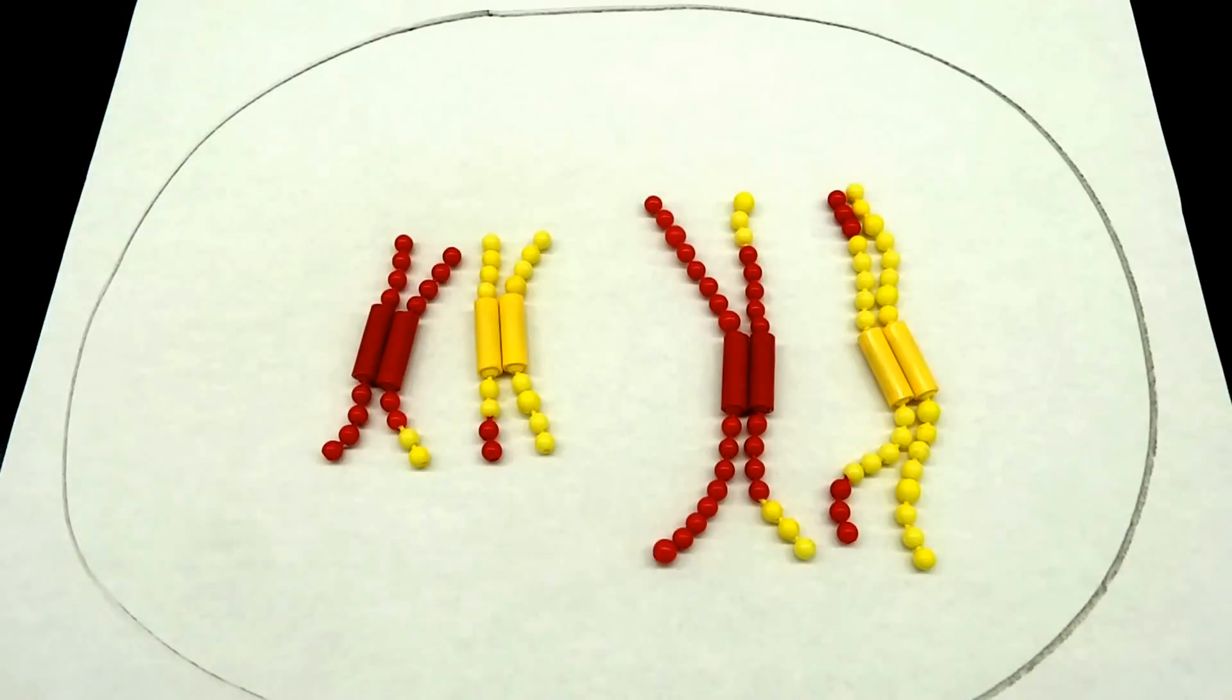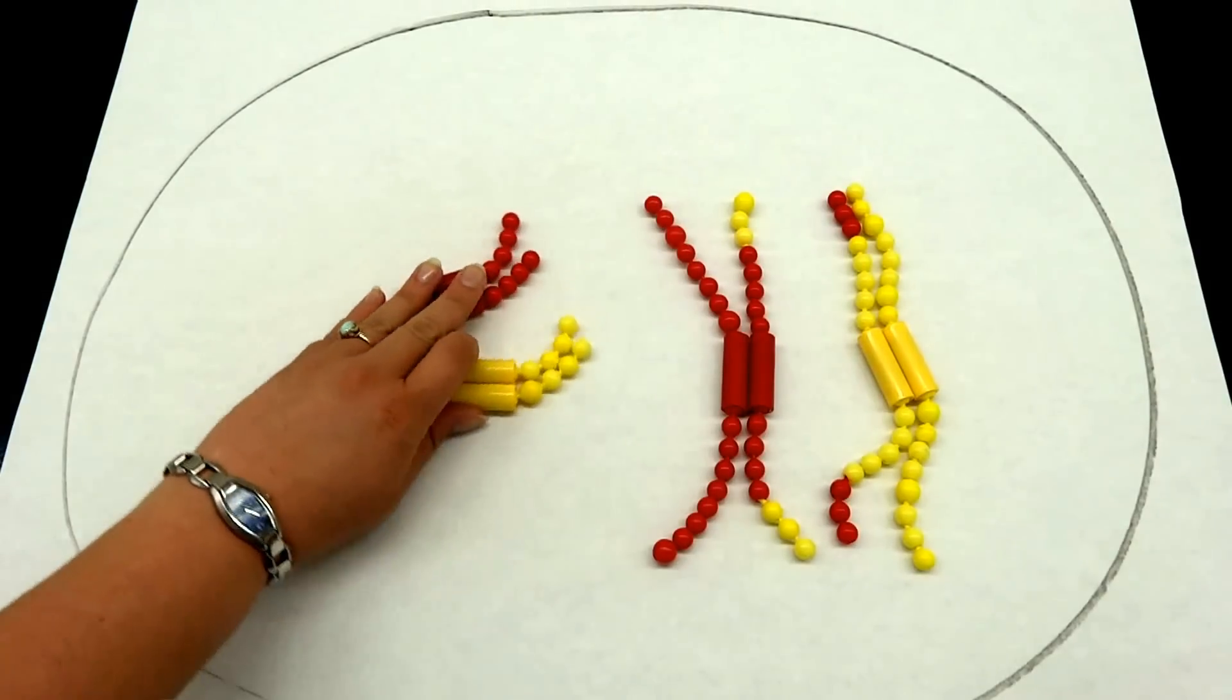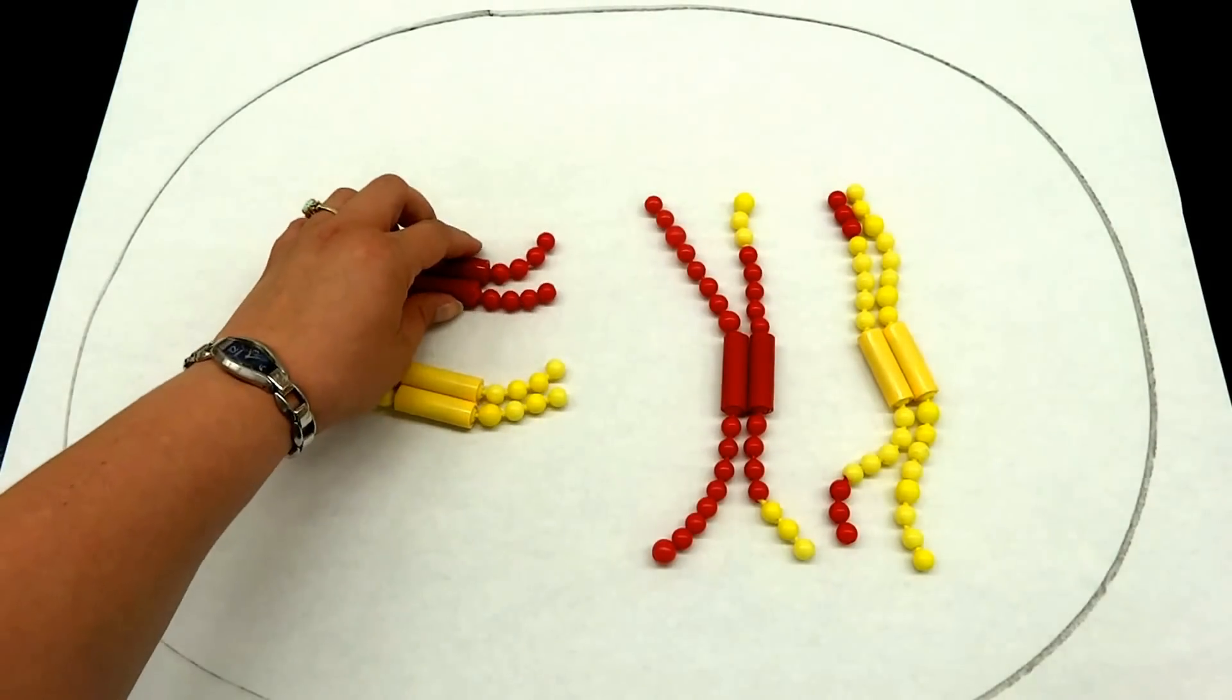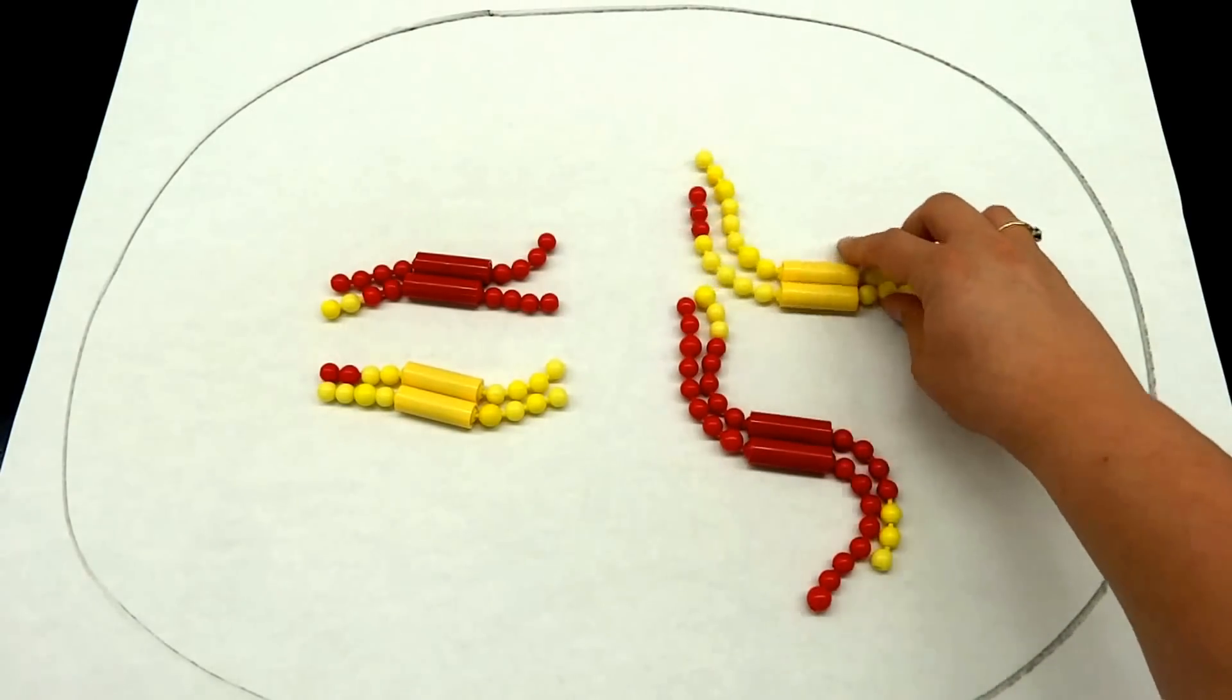Now we're still in prophase and we are going to line up, moving into metaphase. In metaphase we line up our tetrads along the metaphase plate. Let's say our metaphase plate is running right down the center here. Our chromosomes are going to line up on either side of that metaphase plate.